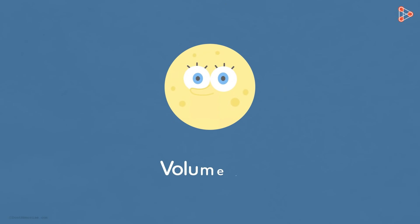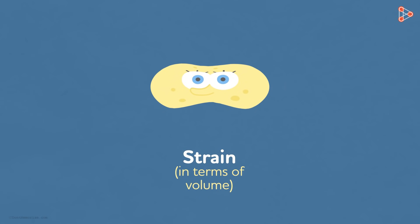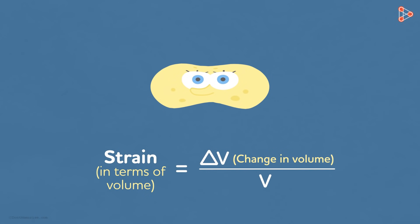Let us take an example of a sponge ball of volume V. When it is compressed, its volume decreases. So the strain in terms of volume is delta V over V. Note that delta V is the change in volume and not the volume of the deformed sphere.